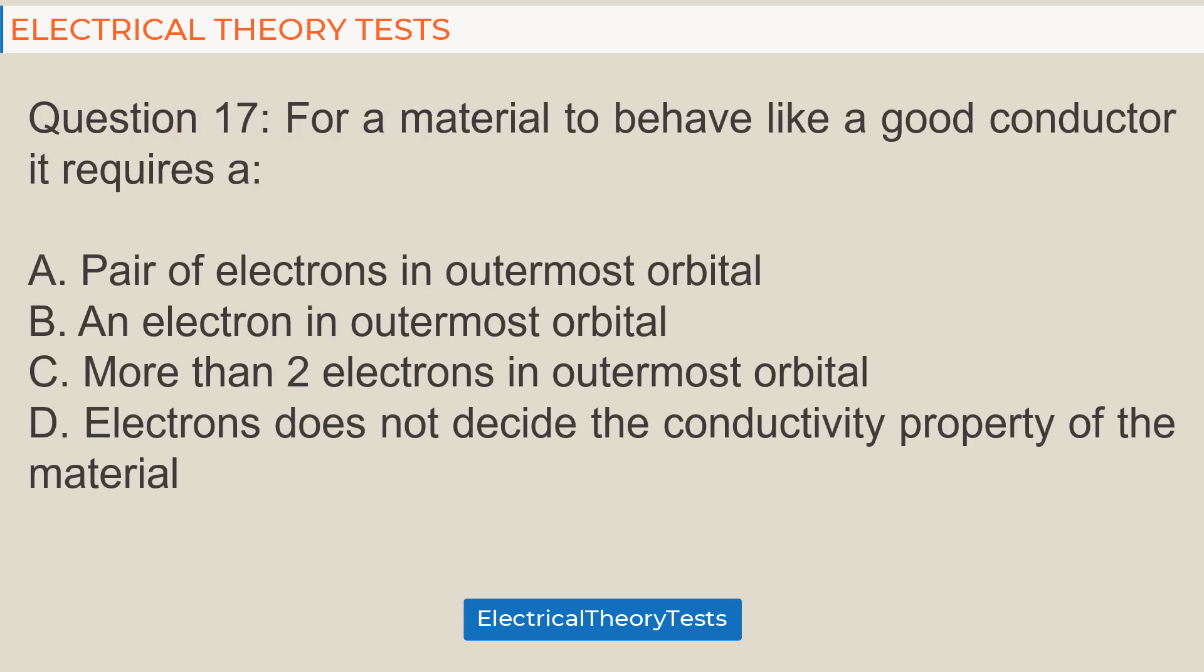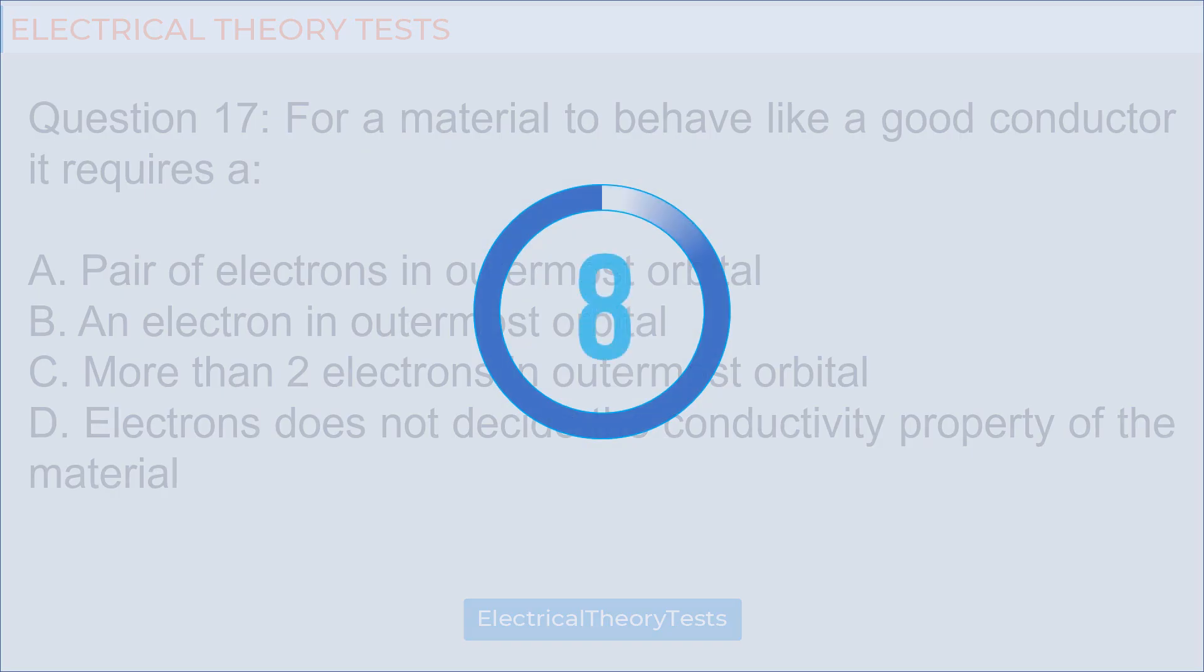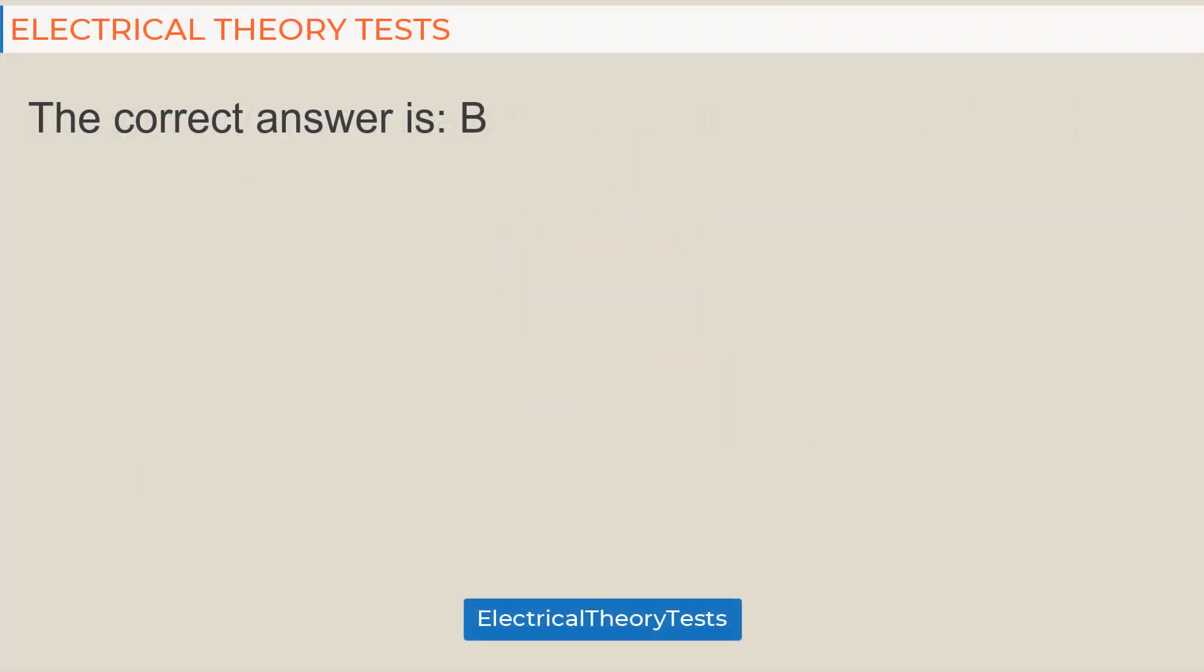Question 17: For a material to behave like a good conductor it requires: A. pair of electrons in outermost orbital, B. an electron in outermost orbital, C. more than two electrons in outermost orbital, D. electrons does not decide the conductivity property of the material. The correct answer is B.